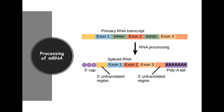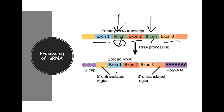Even though the pre-mRNA is capped and polyadenylated, it is still not ready to go. It contains introns. Introns are non-coding — they do not code for anything; they are found as spacers in the gene itself. The coding regions are the exons. It's not good to take this to translation because the non-coding sequences would result in an unusable protein. We have to go through a process called splicing, where introns are removed and exons are joined together.